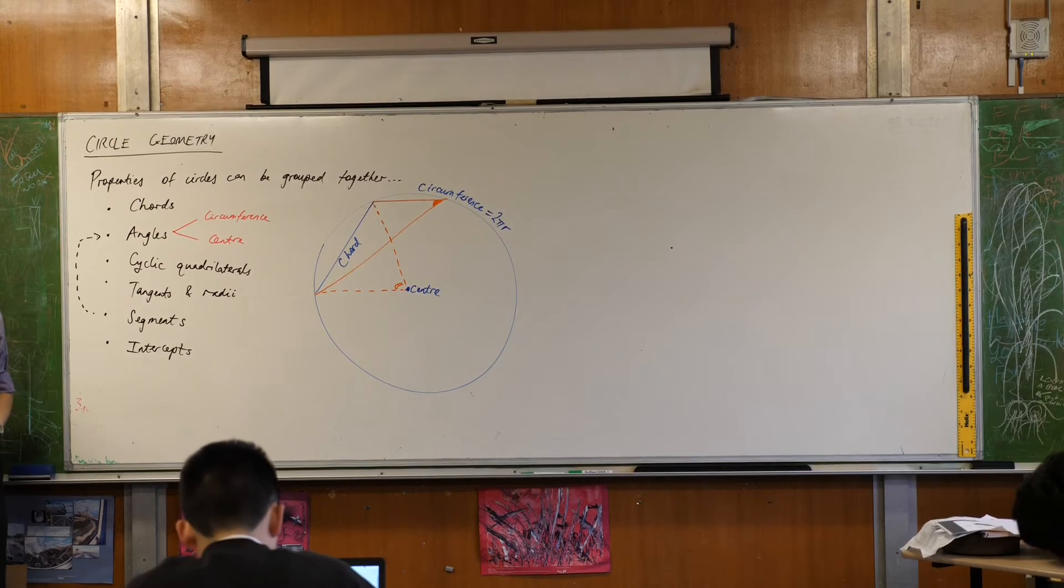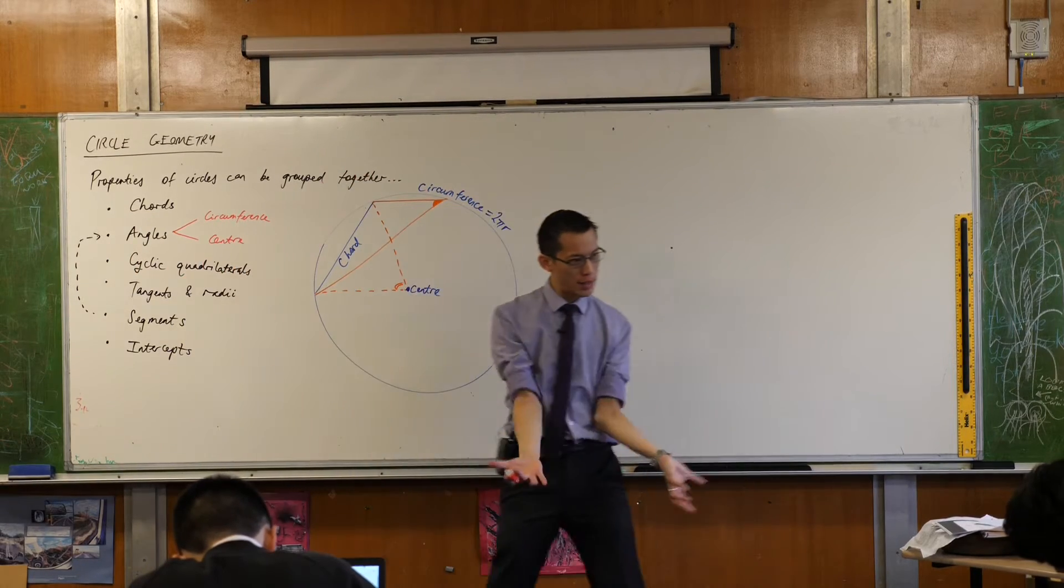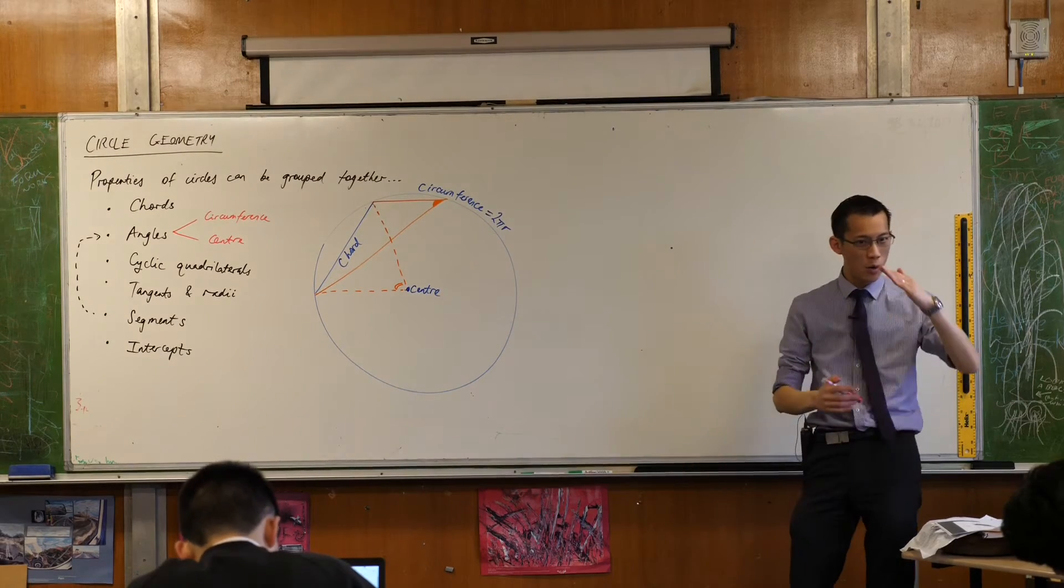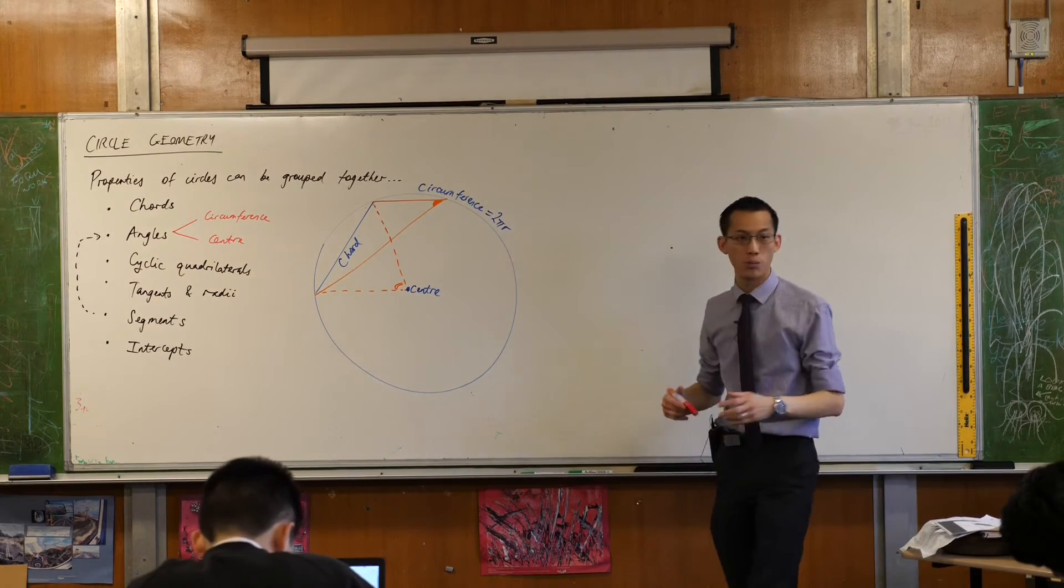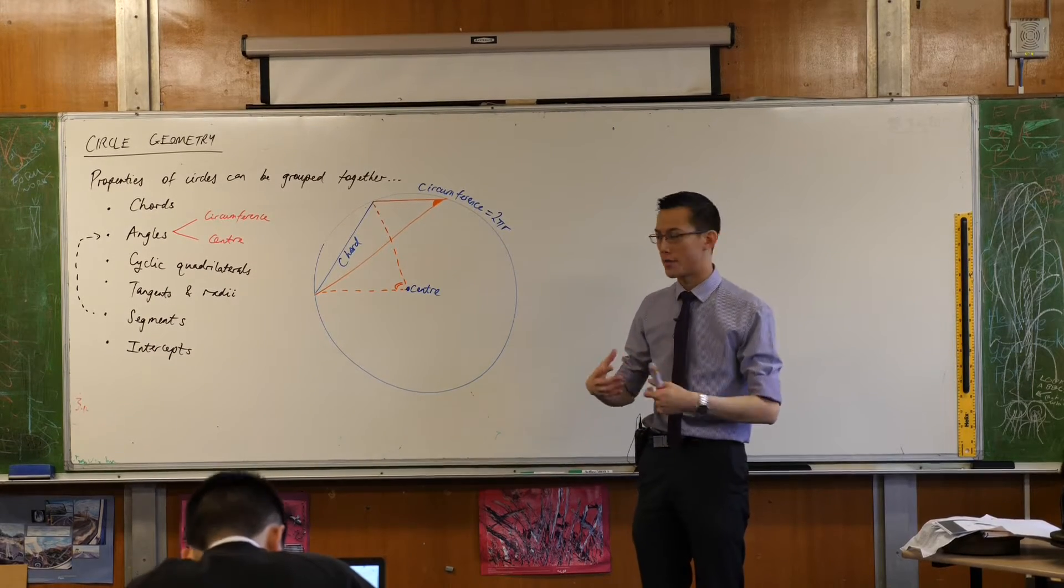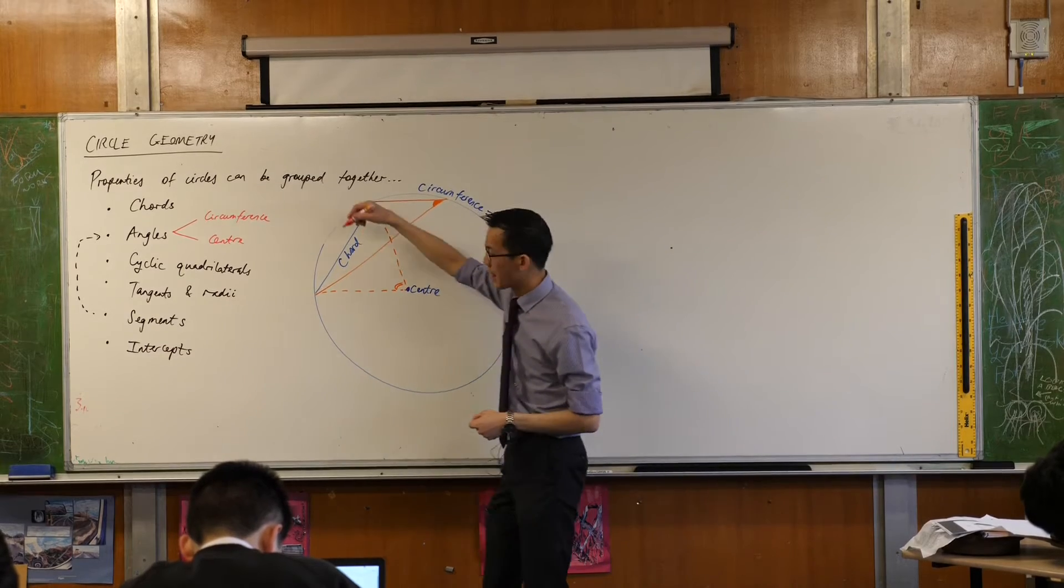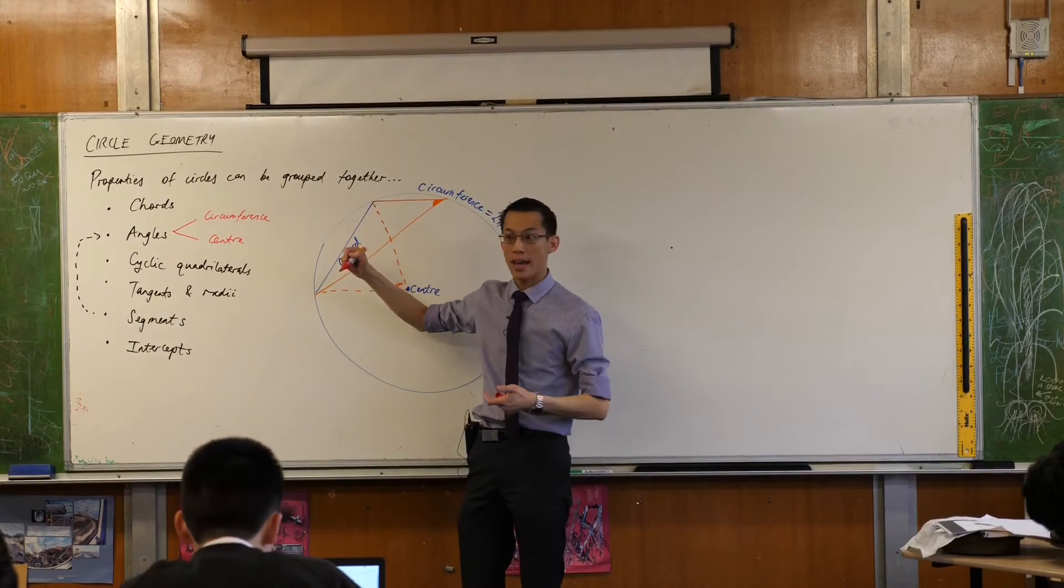Now this is reminding me of some other language that's helpful. We said the circumference is this curvy thing around the edge. We said that chord is that straight interval joining two points on the circumference. You can also have a curved section that joins two parts on the circumference and we would call that, starts with an A. Does anyone know? An arc. Very good.